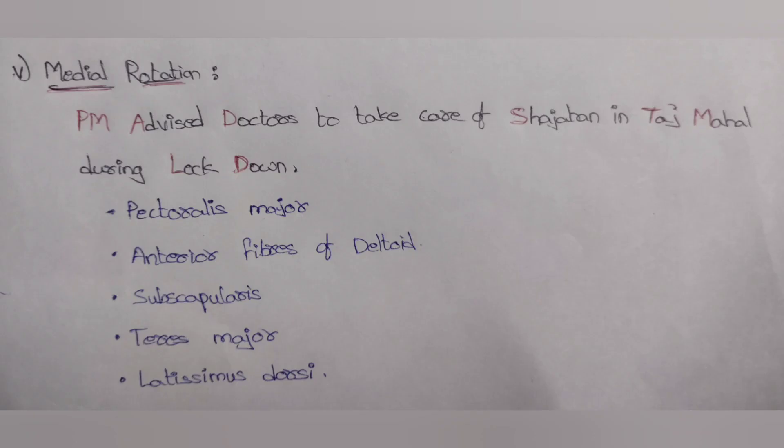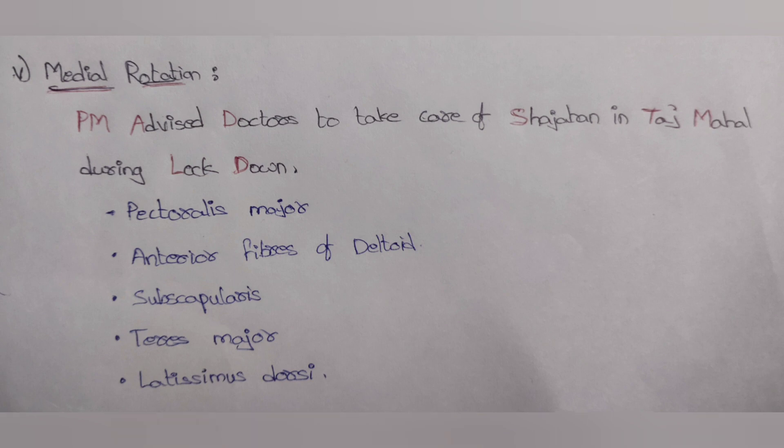The next movement is medial rotation. The mnemonic is 'PM advised doctors to take care of Shajahan in Taj Mahal during lockdown': PM for pectoralis major, advised doctors for anterior fibers of deltoid muscle, Shajahan for subscapularis, Taj Mahal for teres major, and lockdown for latissimus dorsi.